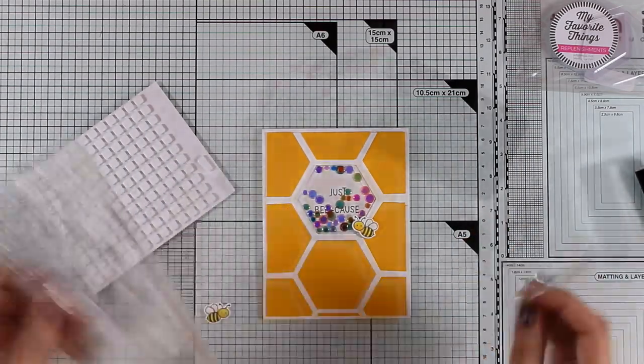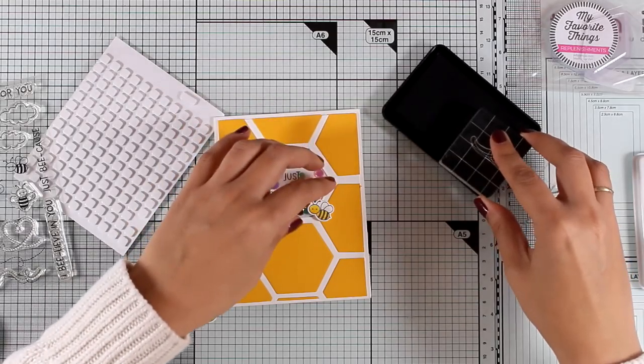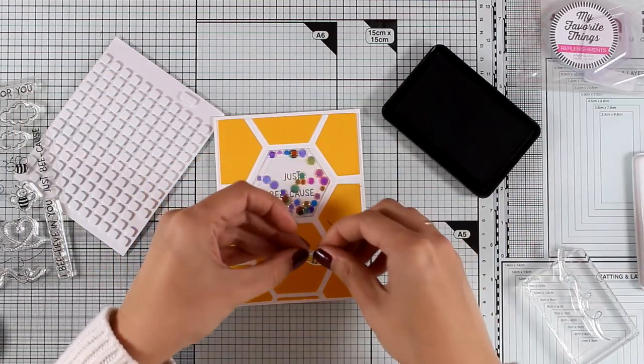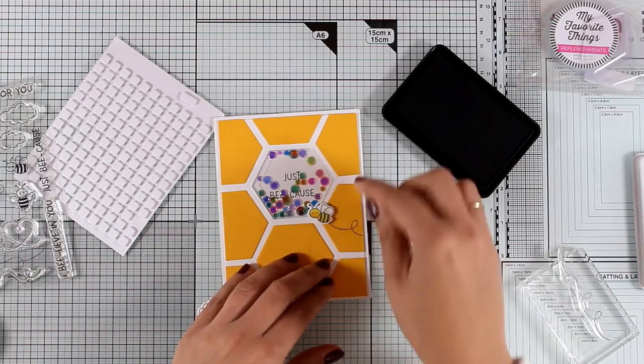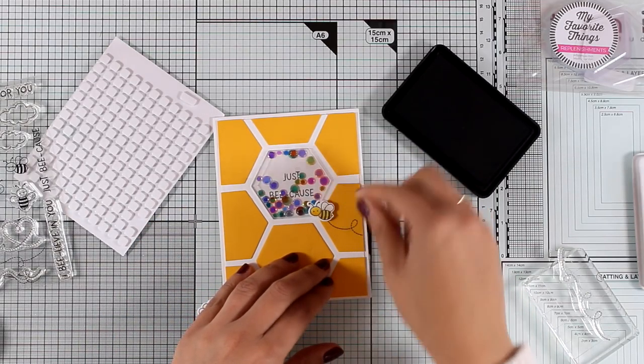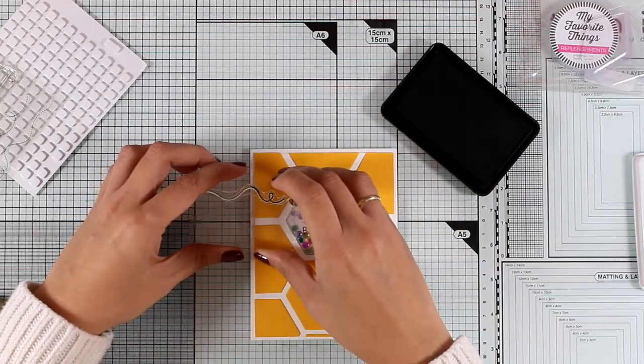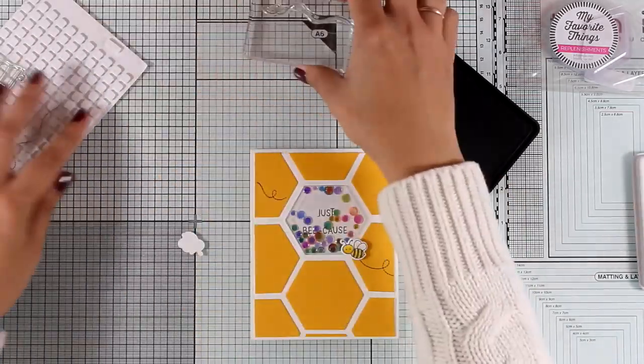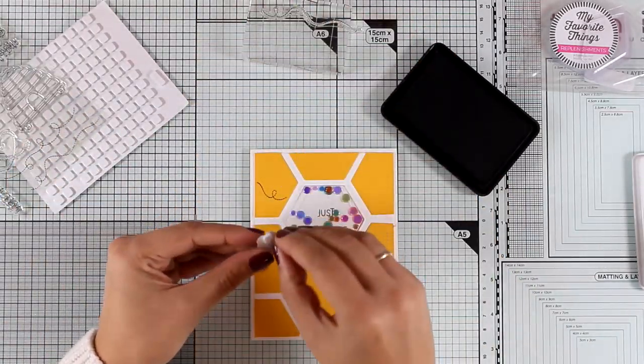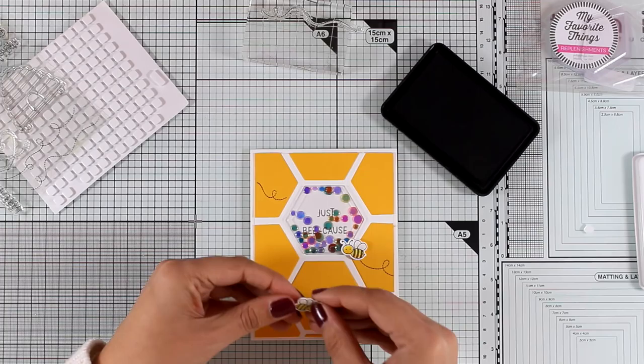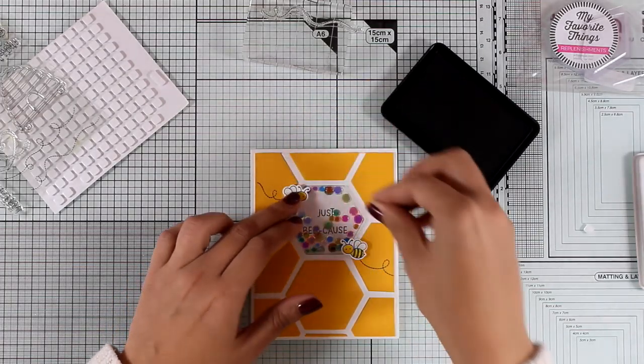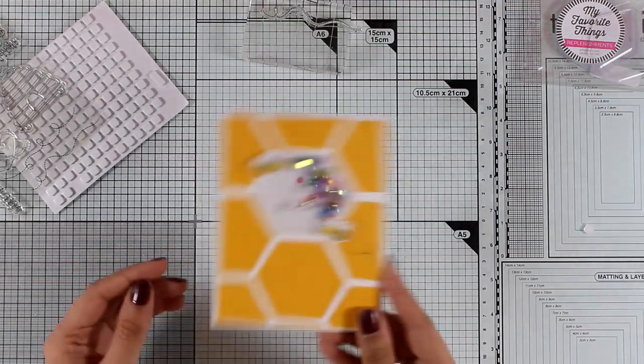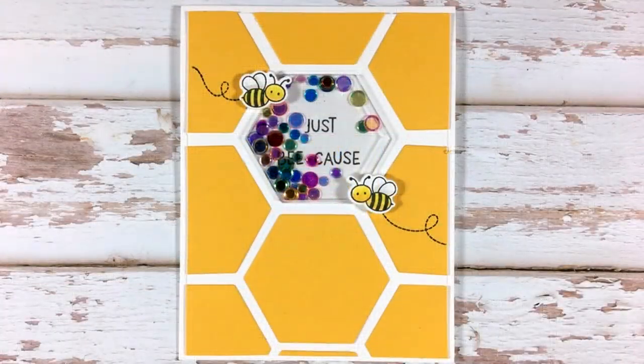Now in the same stamp set there are some trails that you can stamp so I am going to do that just to add some more interest on my card for both my bees and this is going to complete the card. You can pair this design with pretty much any sentiment from the stamp set so it can be a birthday card, a friendship card, many different options there.